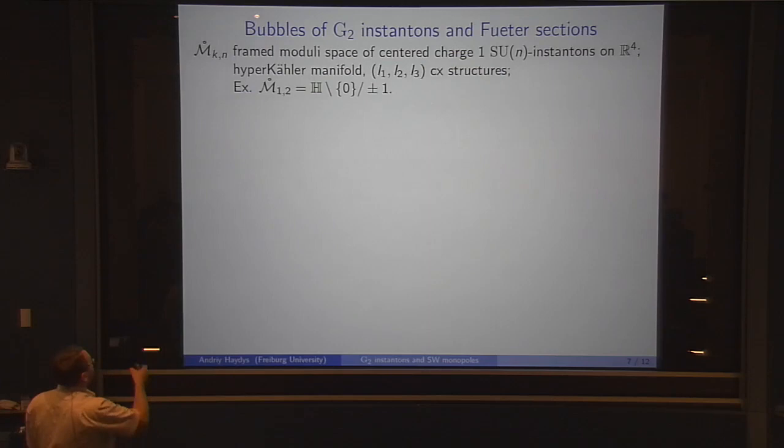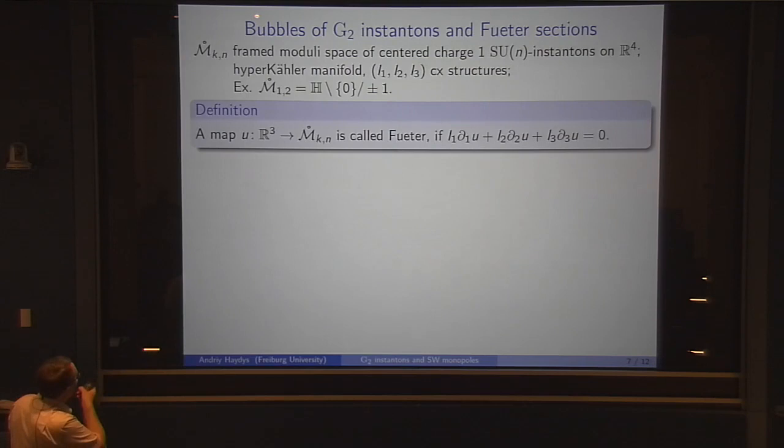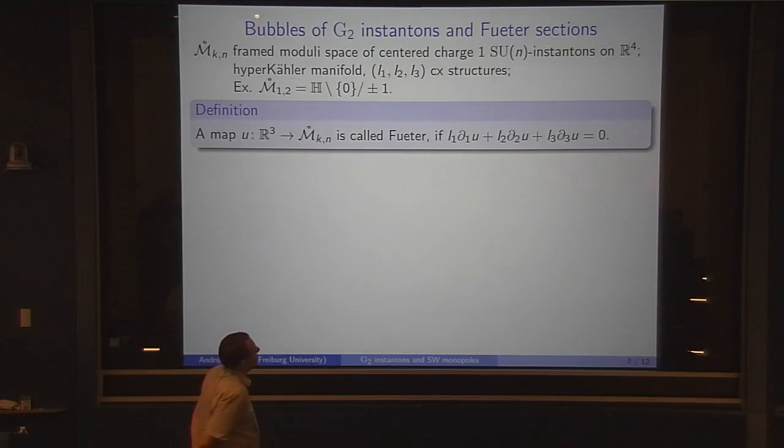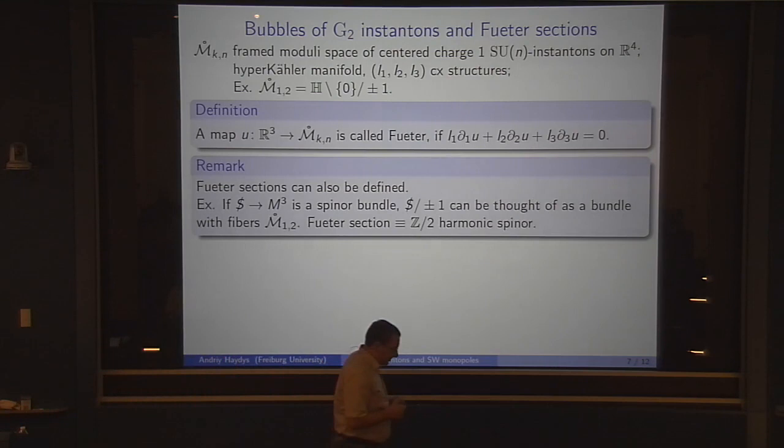The only important property is that it comes equipped with three complex structures which satisfy quaternionic relations. The basic example we should keep in mind is M_1,2, which is just the quotient of H by plus minus 1. If you want to have a manifold, you should exclude 0. But if you want to have a complexification of that, 0 will be a singularity.